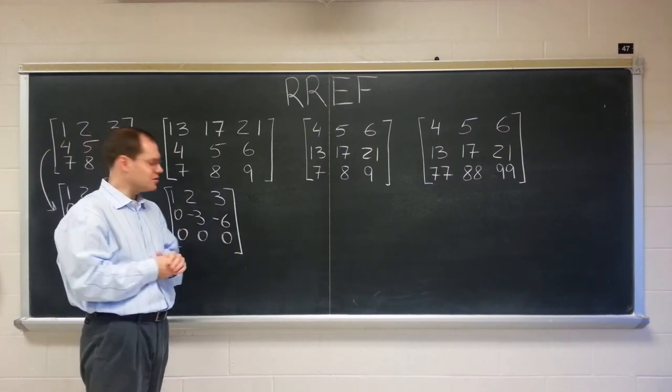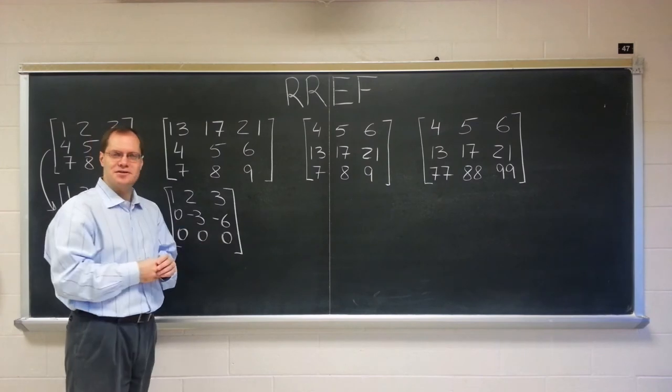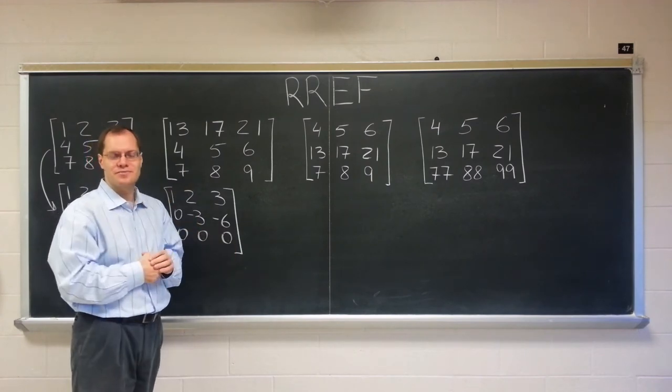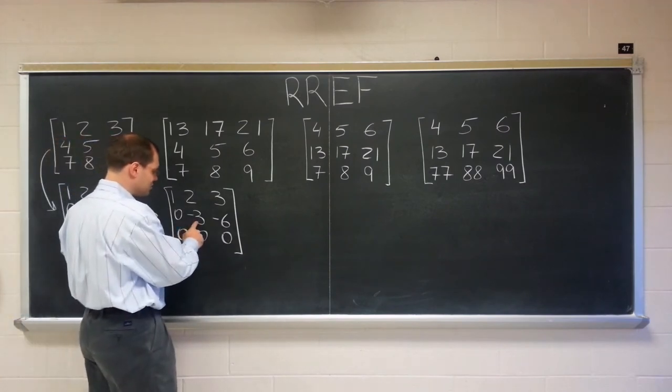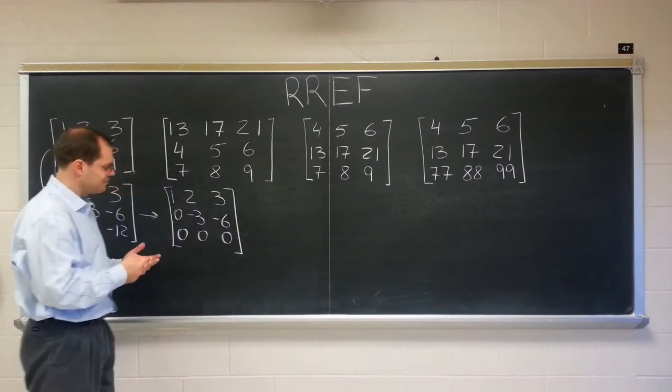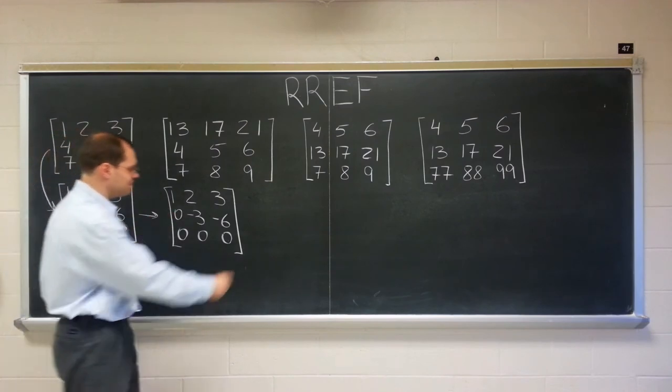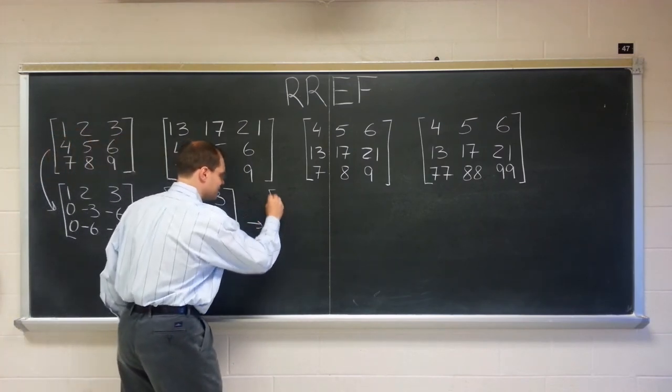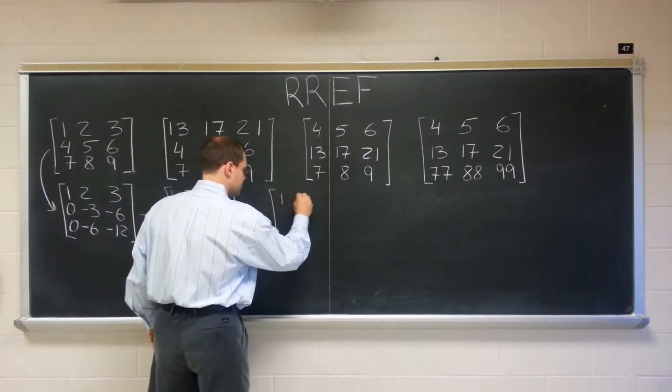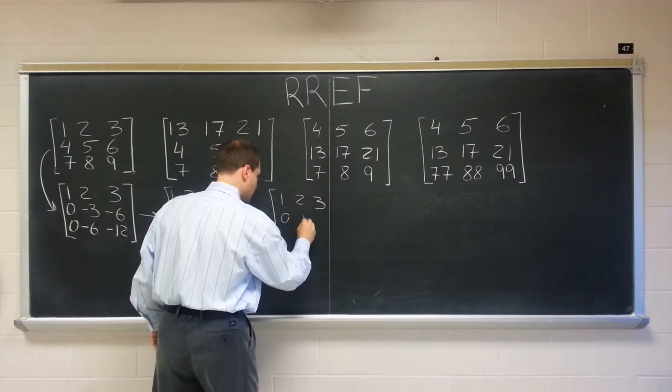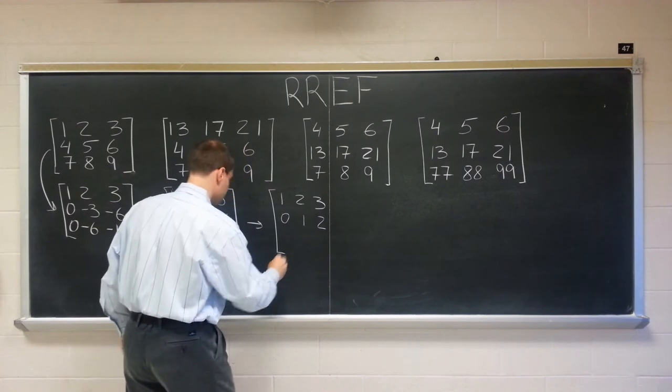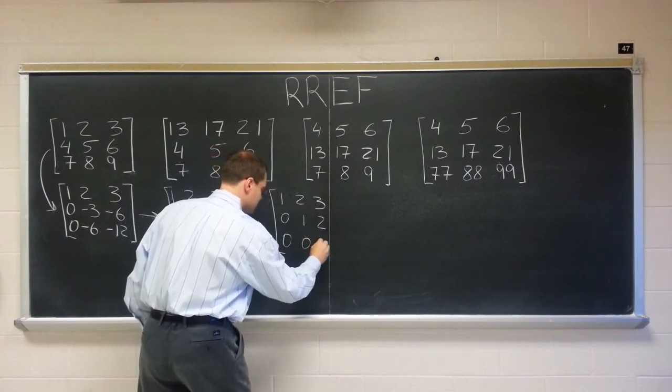It always happens somewhere along this process. And if you're a computer, you would of course not stop anywhere along this process until you've reached the row reduced echelon form. Okay, what's the next step? Perhaps it is to divide the second column by negative three, giving us one, two, three, zero, one, two, zero, zero, zero.